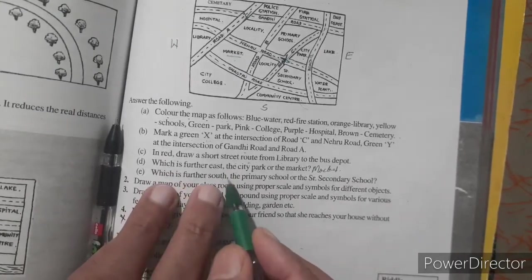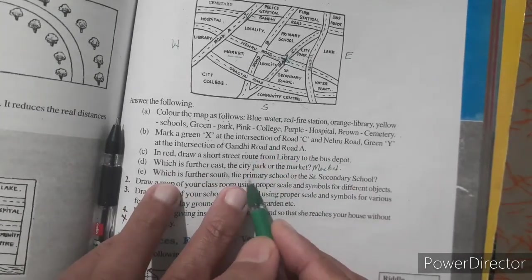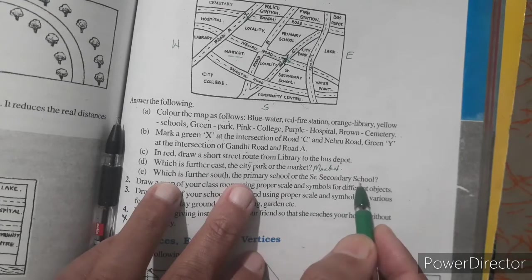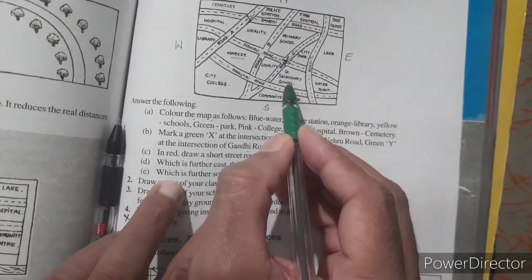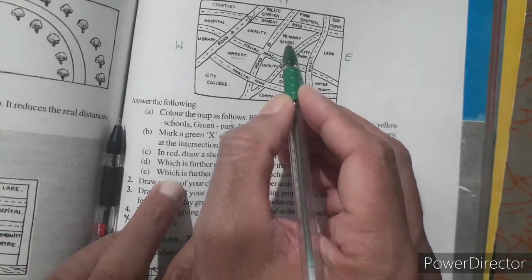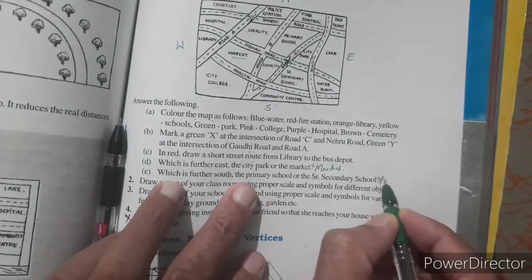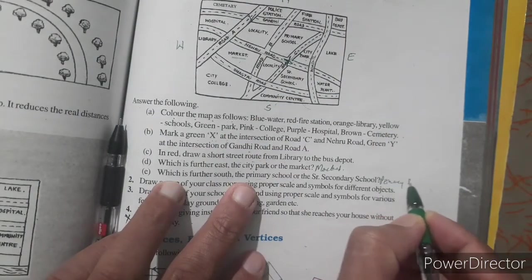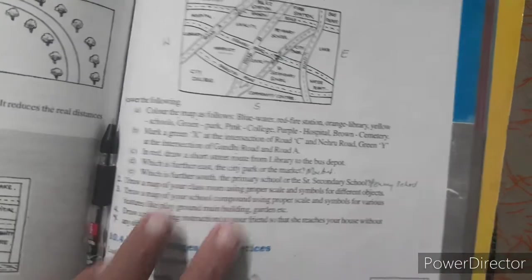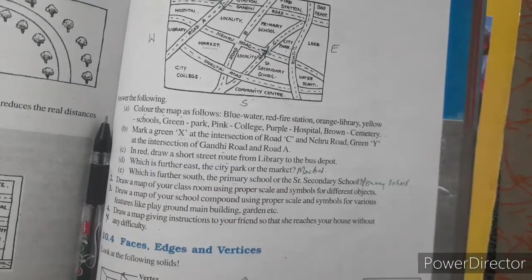Then which is further south? That is primary school or senior secondary school. Look, here senior secondary school and here primary school. So that is primary school. So you just write down primary school. So solve first question in your notebook.